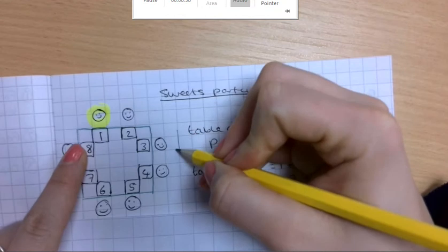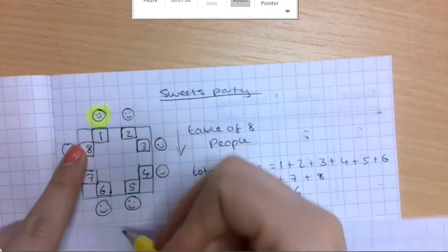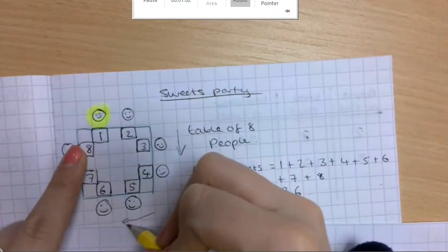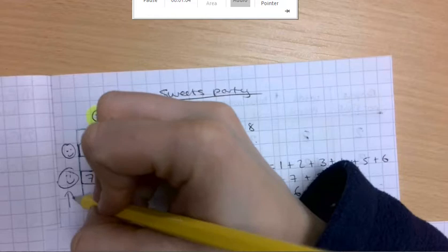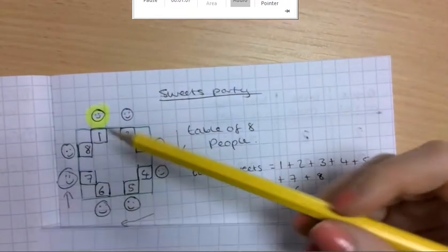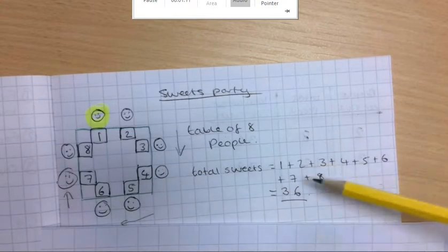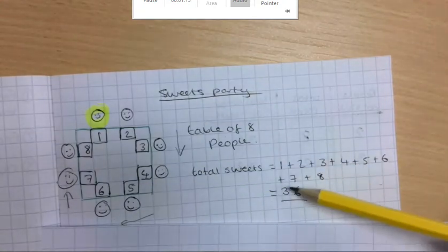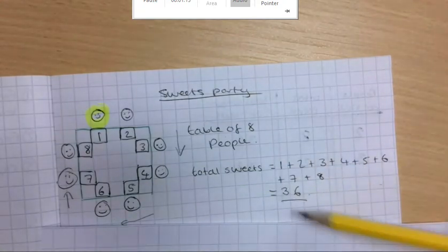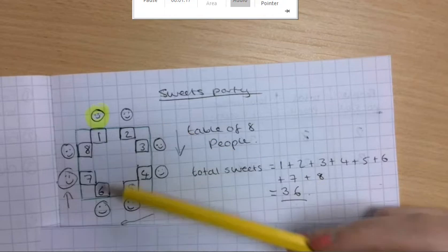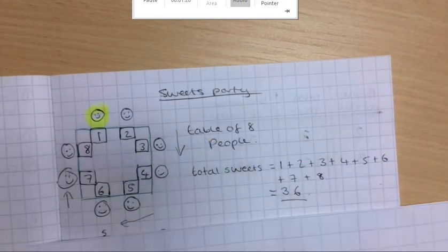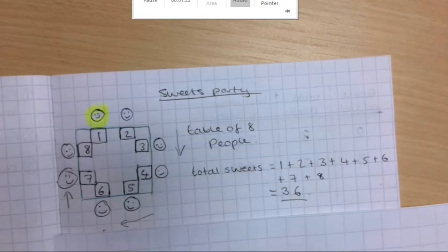And you always hand the sweets out in a clockwise direction, like this around the table. And once we've done this and we've written out how many each person had, we then found the total number of sweets is 36 for when you have eight people. And then I said, okay, so let's make the square table bigger.